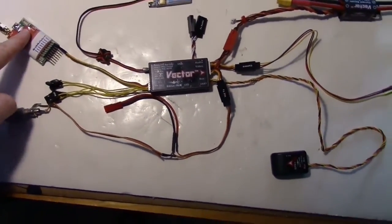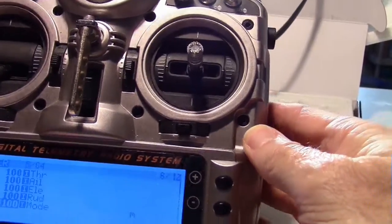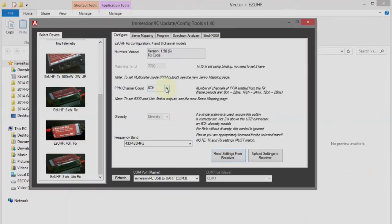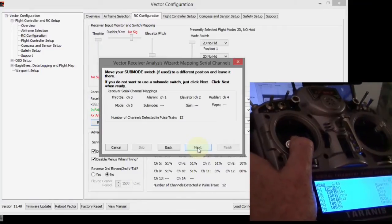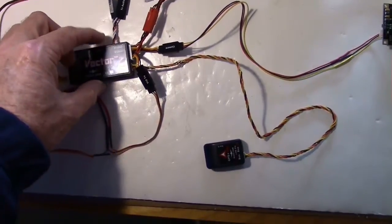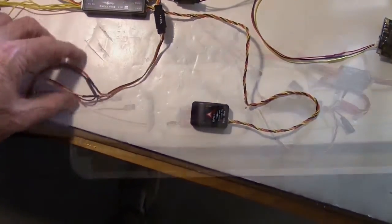we laid out the wiring on the bench for the vector, programmed the Tyrannus radio, configured the EZUHF receiver, bound them together, then configured the vector. Now we're going to install all these components into the fuselage of the Multiplex TwinStar.